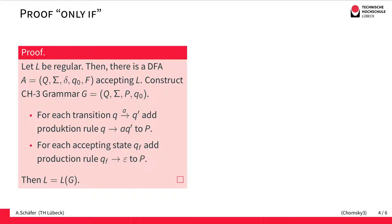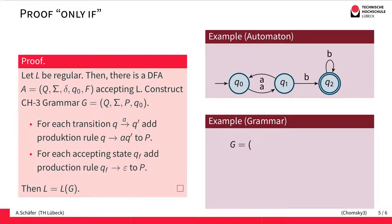These are the normal productions. Then we have to deal with accepting. Accepting for finite automata means that if the word is processed completely and we end up in an accepting state, then the word is accepted. So if we decide we have produced all the required letters, we simply replace our non-terminal Q' by the empty word epsilon.